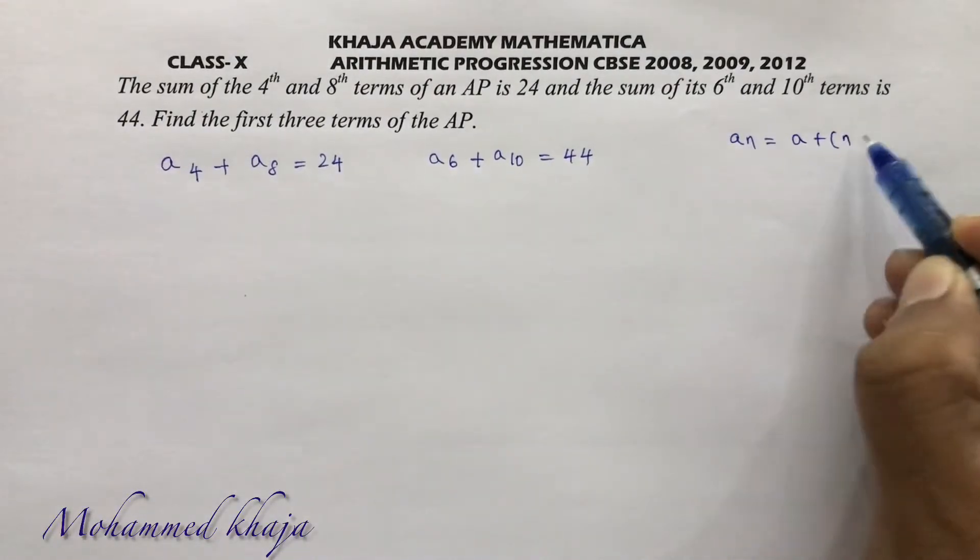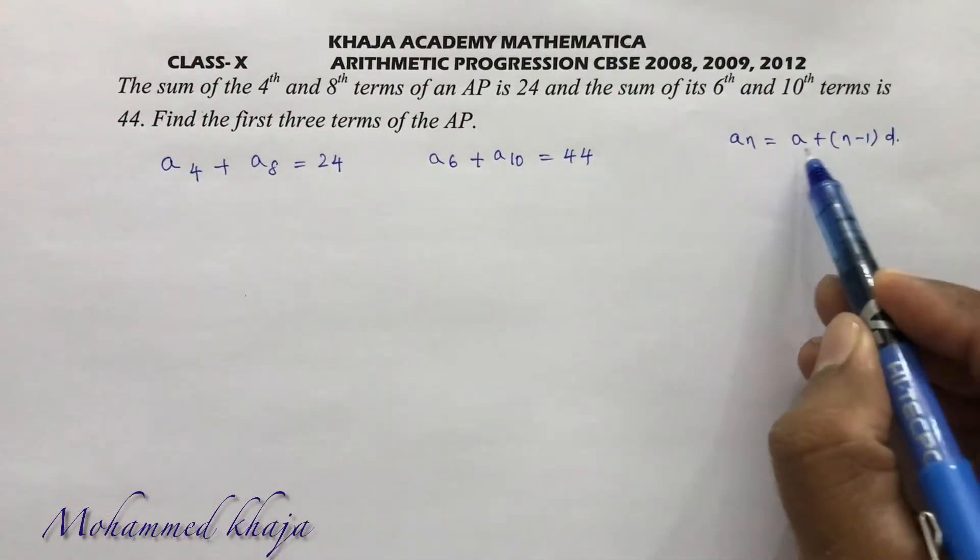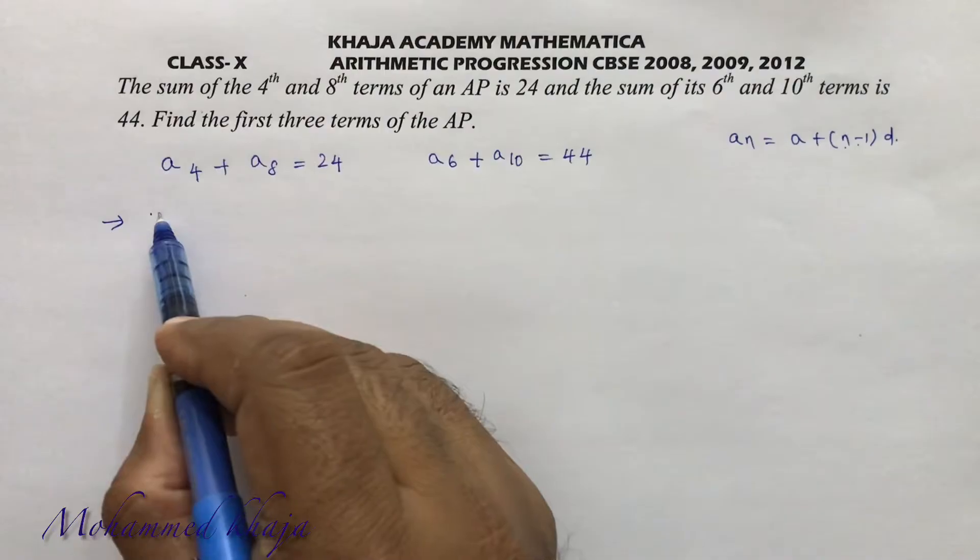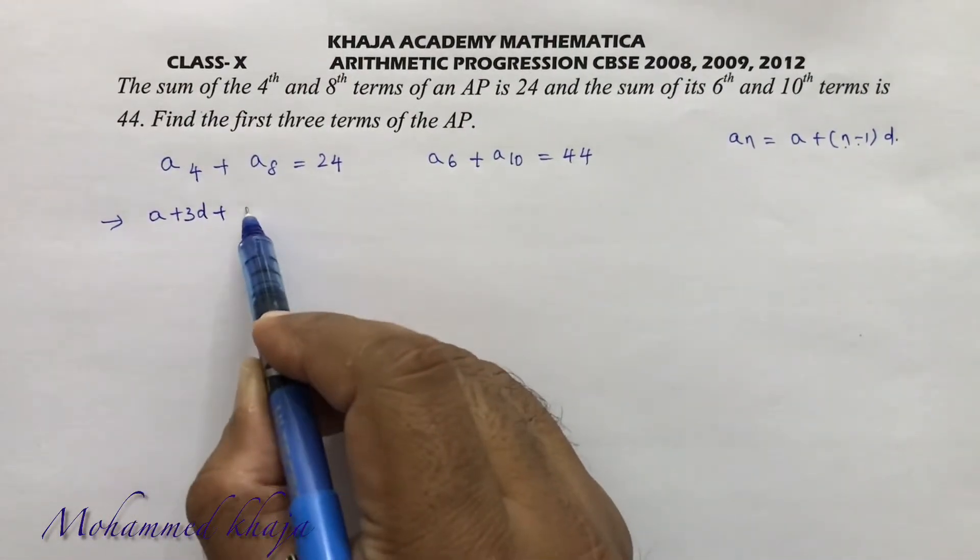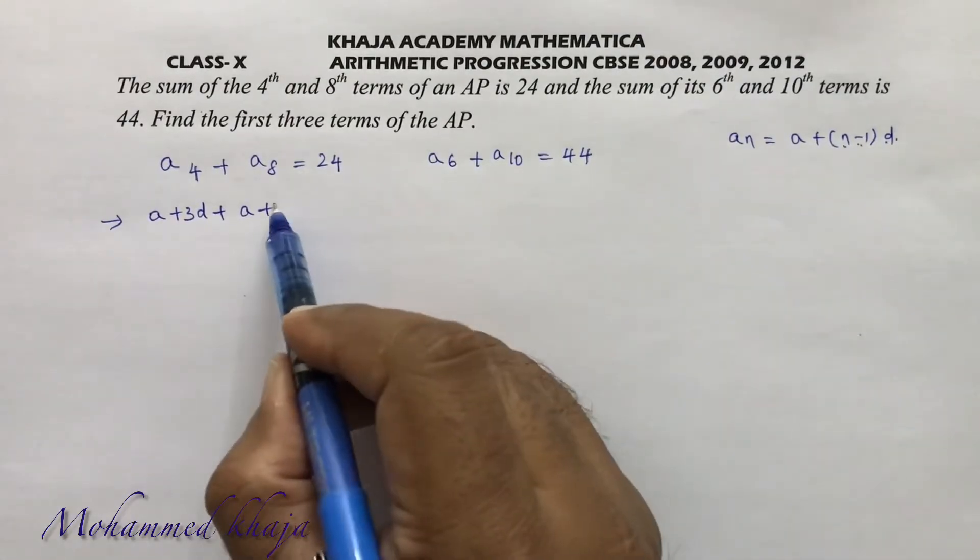If you want a4, a4 will be a + (4-1)d, that is a + 3d. And a8 will be a + (8-1)d, that is a + 7d.